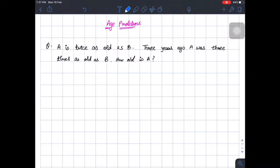Hello friends, in this video we will be solving two age-related problems. First question: A is twice as old as B. This means if age of B is x, then age of A is 2x. Now three years ago, A was three times as old as B.